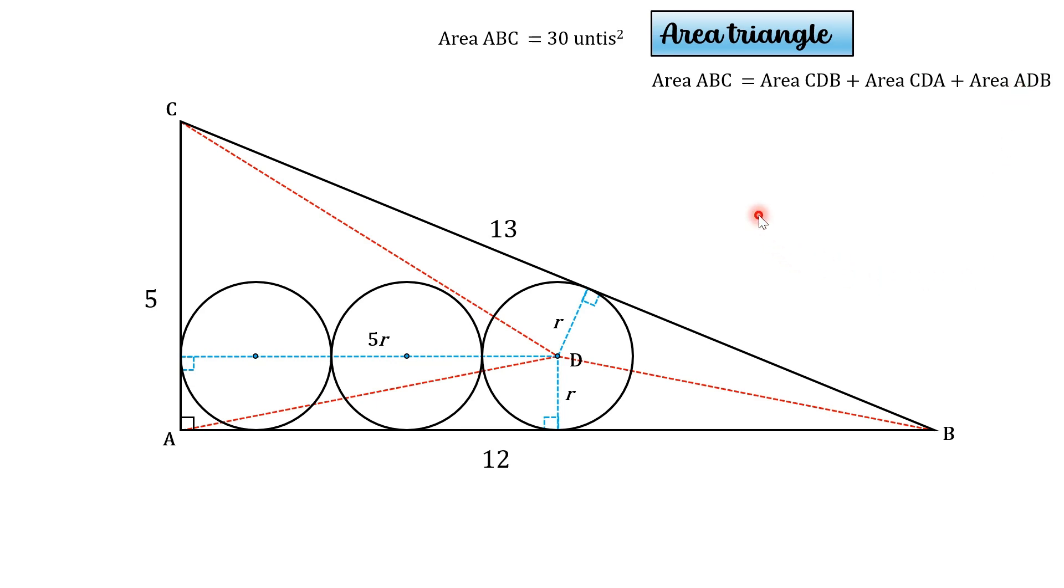So we can substitute the formulas into this. Now because we know the base of each of these three triangles, and the heights are all expressed in terms of R, this gives us the following, where the only variable that we are looking for is R, so we can solve the equation and find its value.